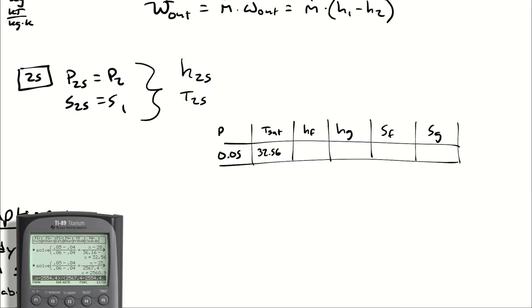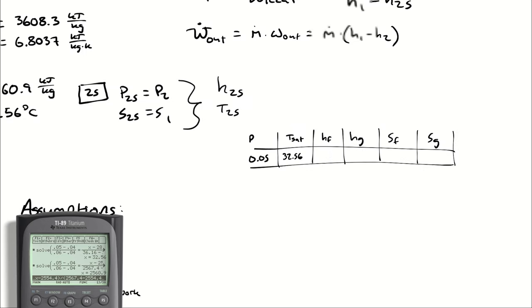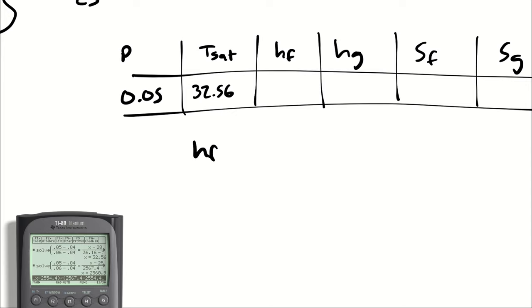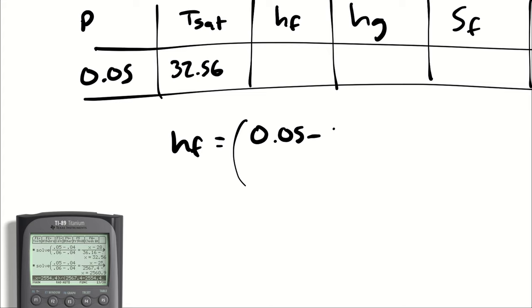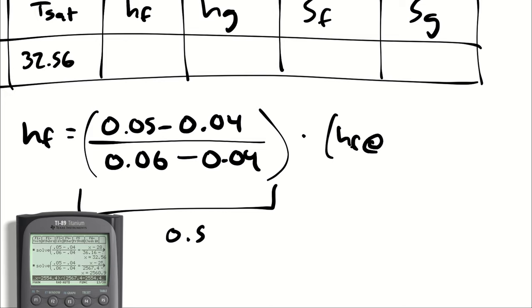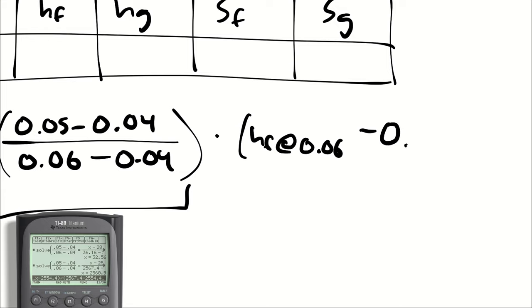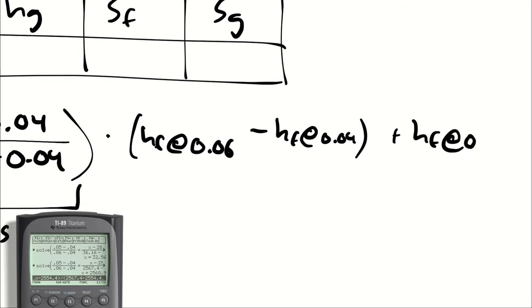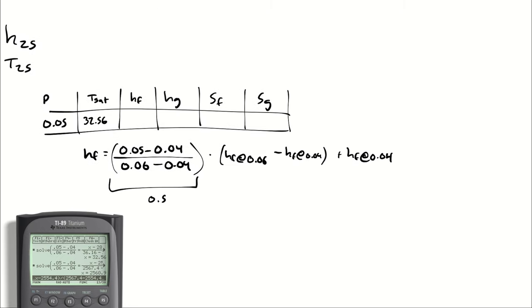In order to interpolate for the rest of the values, I'm going to use the same exact interpolation. That's 0.05 minus 0.04 divided by 0.06 minus 0.04, which means that every single one of these is going to end up being HF is equal to 0.05 minus 0.04 divided by 0.06 minus 0.04. That entire quantity is 0.5 times HF at 0.06 minus HF at 0.04 plus HF at 0.04. So I'm going to, for simplification's sake, just write that as 0.5 multiplied by the difference between the properties that we are interpolating between plus the HF property.